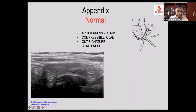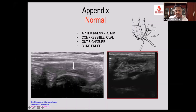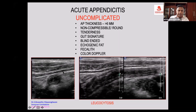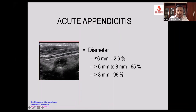You will see the gut signature in the wall. When you turn to the long axis, you may also fail to pick up any abnormality, but if tenderness is present in the right iliac fossa, then suggest a CT scan. The AP thickness of the appendix will be more than 6 millimeters, and it will be non-compressible — even when you compress, it will remain so. This is almost 100% diagnostic of acute appendicitis.